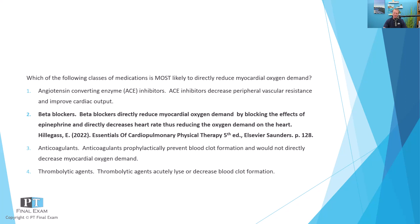The other options — anticoagulants and thrombolytic agents — are used to increase myocardial oxygen supply. Anticoagulants prevent blood clots prophylactically, while thrombolytic agents destroy existing blood clots, both with the idea of increasing myocardial oxygen supply. ACE inhibitors are also on the supply side: they reduce blood pressure, or afterload, making it easier to push blood out into the system and more easily supplying the tissue by reducing systemic vascular resistance.